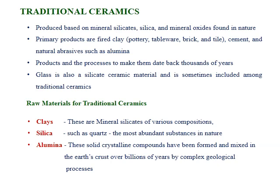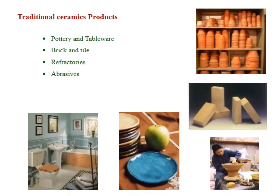Clay, silica, and alumina are the raw materials for traditional ceramics. Clay consists of mineral silicates of various compositions. Silica, such as quartz, is the most abundant substance in nature. Alumina is a solid crystalline compound formed and mixed in the earth's crust over billions of years by complex geological processes. Products from traditional ceramics include pottery and tableware, brick and tile, refractories, and abrasives — all ceramics we use in our household activities.